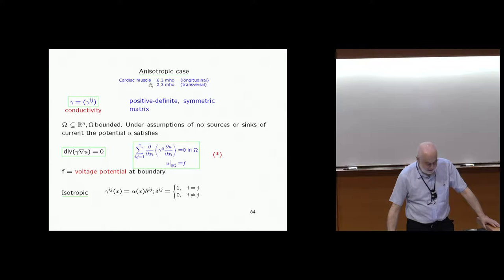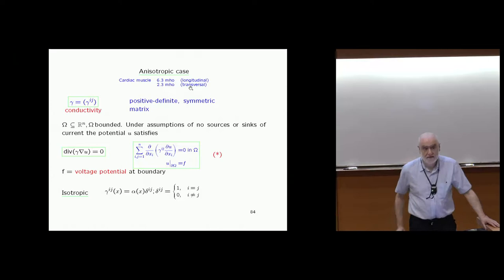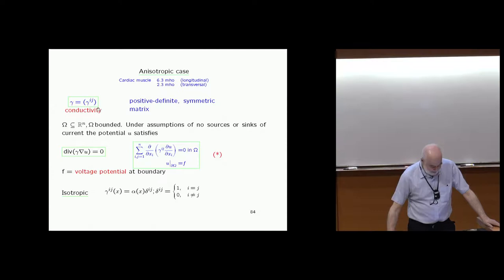As I already mentioned earlier, cardiac muscle and general muscle in the human body is highly anisotropic — for instance, the conductivity is much larger in the longitudinal direction than in the transversal direction.